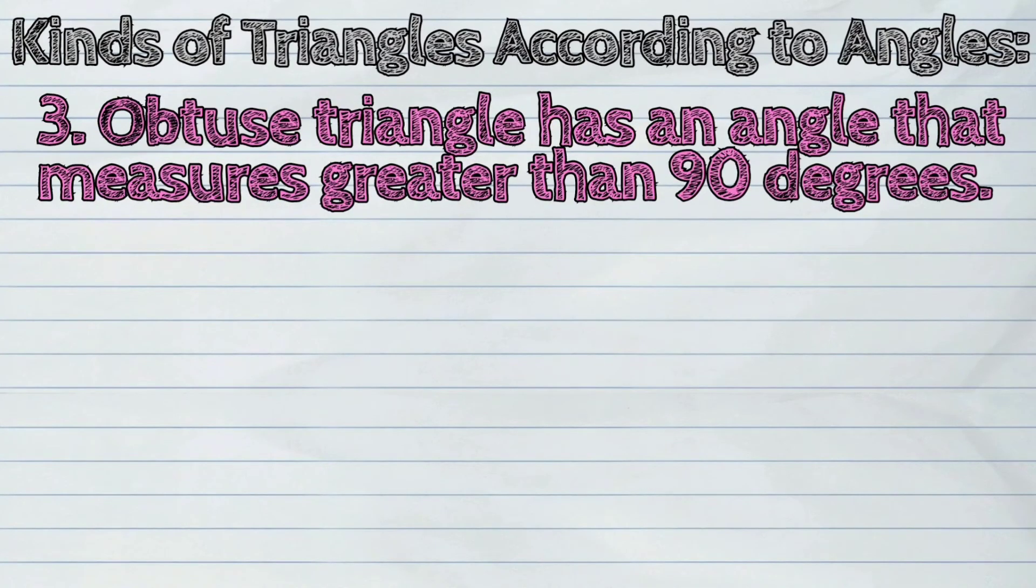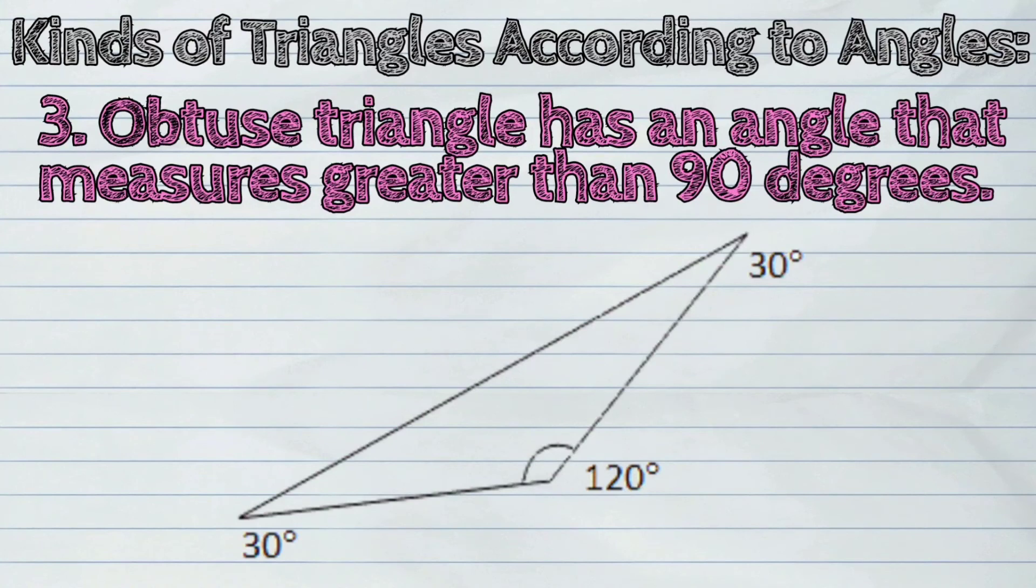And obtuse triangle has an angle that measures greater than 90 degrees.